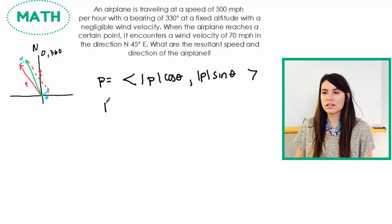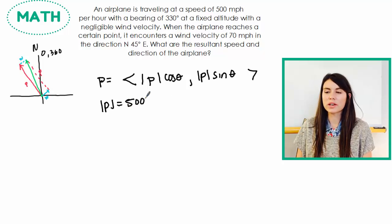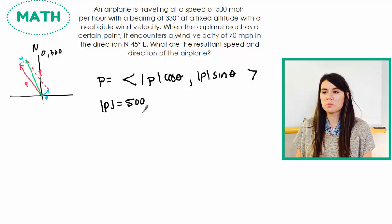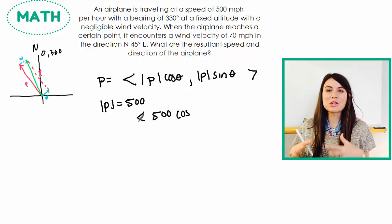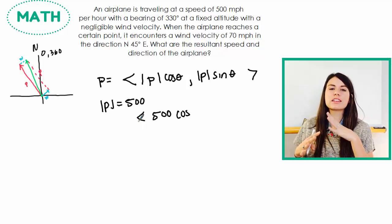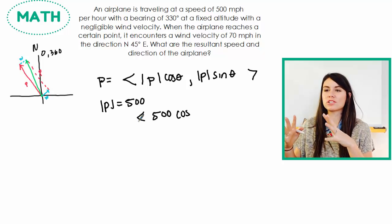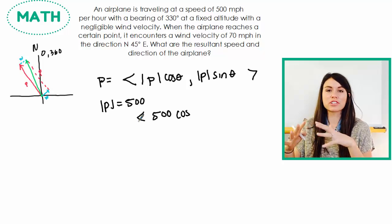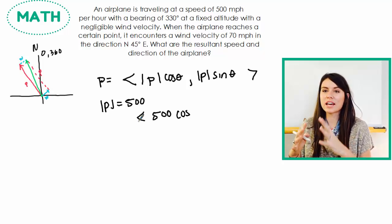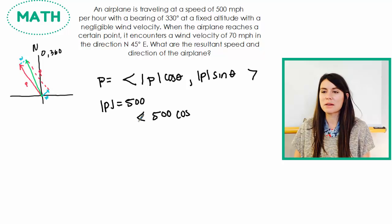So we know the magnitude is 500. It was given to us because that's how fast it's going. So that's going to be pretty easy to plug in. 500 cosine, and then the angle, this is where it gets a little annoying. So whoever created the compass versus the unit circle did not get together and say, hey, let's make one circle and let's have everything line up.